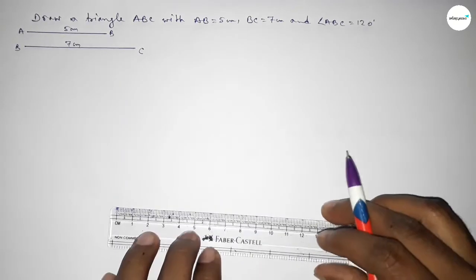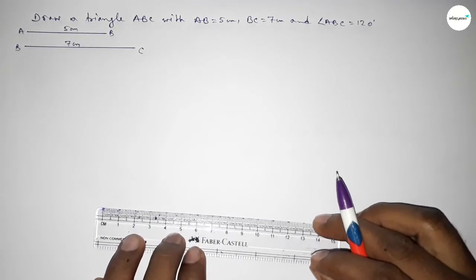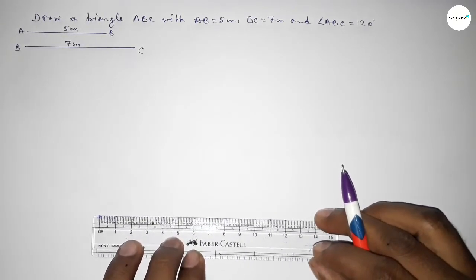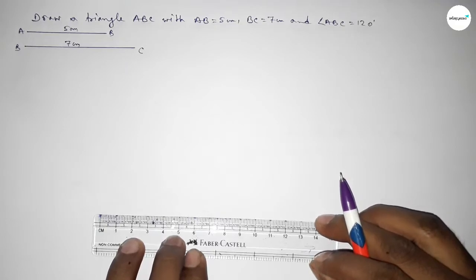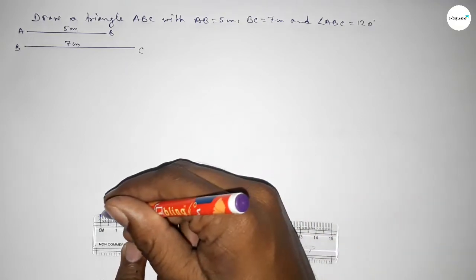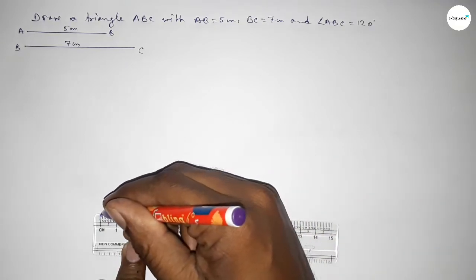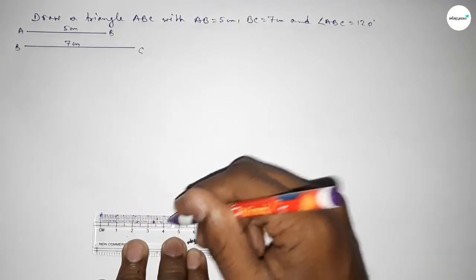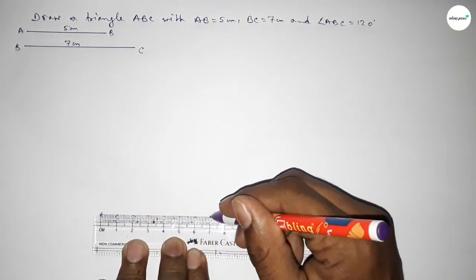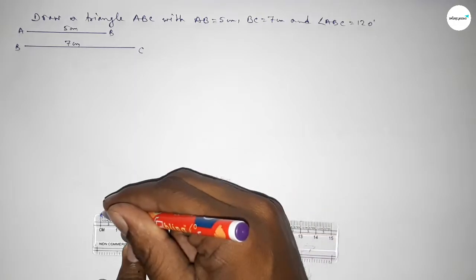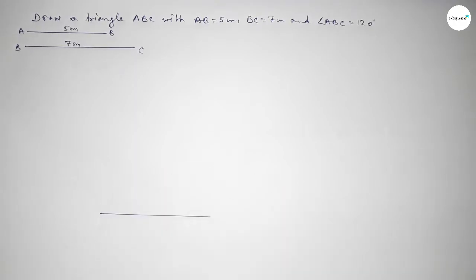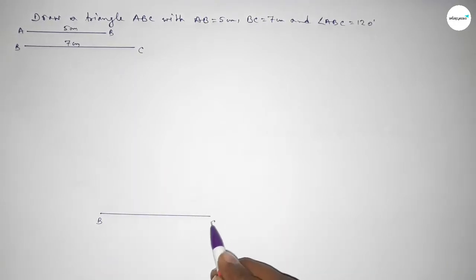Now first we have to draw a line of length 7 centimeters, counting 0, 1, 2, 3, 4, 5, 6, 7 — so this is 7 centimeters. Taking here point B and here point C.